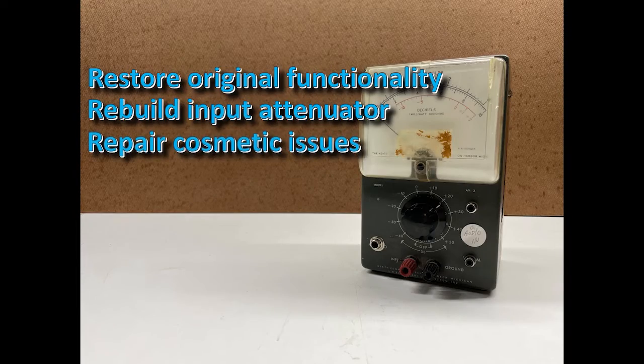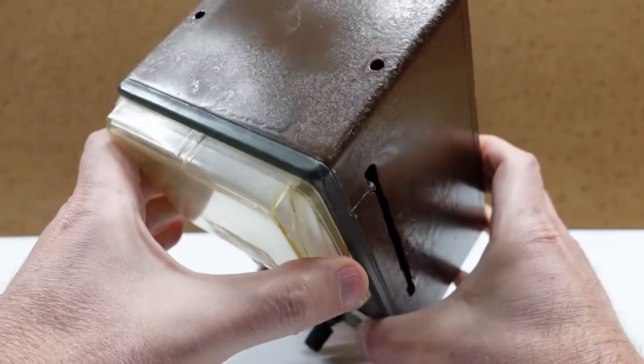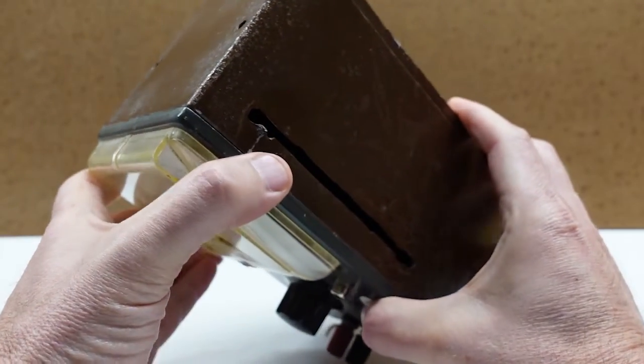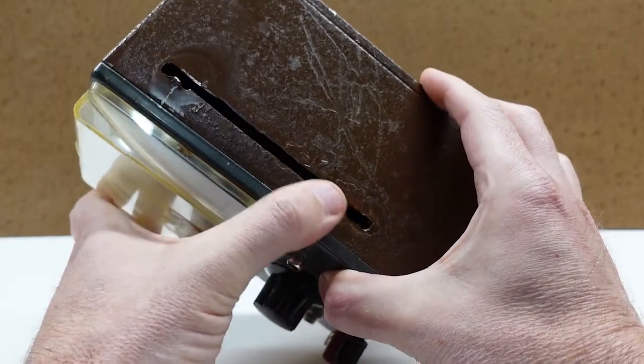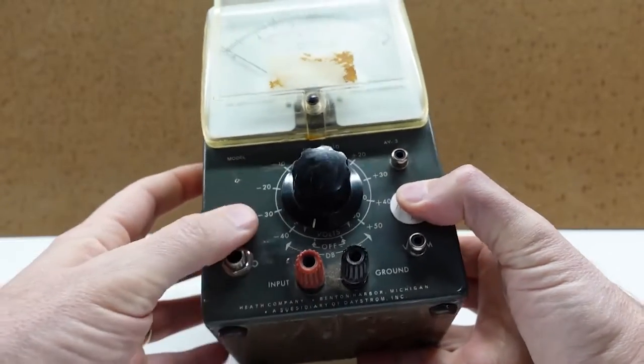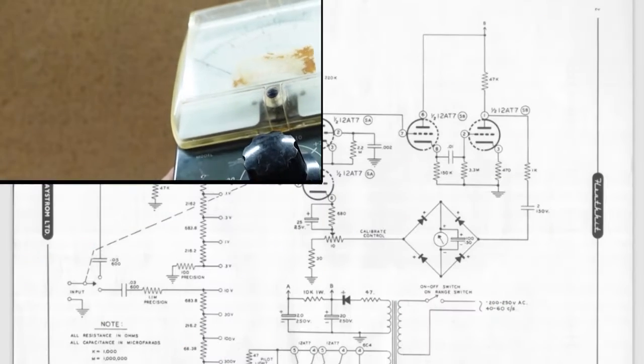Rounding out the scope of work are all the cosmetic issues. This includes little things like the missing handle, which I'll probably design in 3D print, but also more challenging items like fixing the gash in the side of the case, and cosmetic repairs to the front panel, and possibly the clear meter cover itself. Okay,